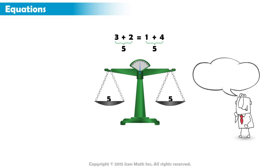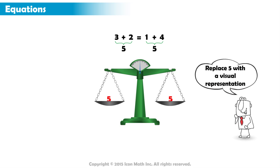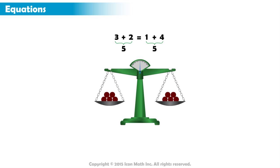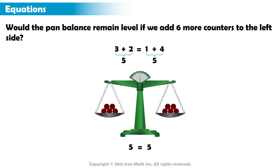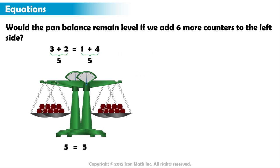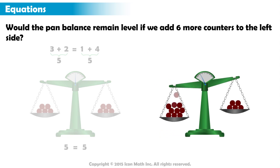Let's replace the numerical symbol 5 with a visual representation. We have 5 counters on the right side and 5 counters on the left side. If we decide to add 6 more counters to the left side of the pan balance, the pan balance would not remain level because the left side would have more counters.